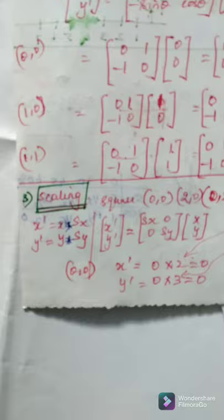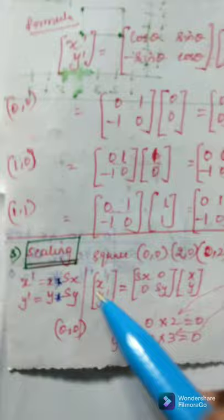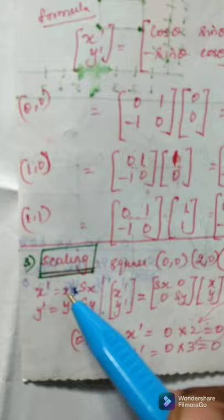Now, we will see scaling. Scaling means altering the size of the object, either increase or decrease. Here, we will use two scaling factors, Sx and Sy. The formula is more or less similar to translation. But, there we use plus and here we use multiplication symbol.